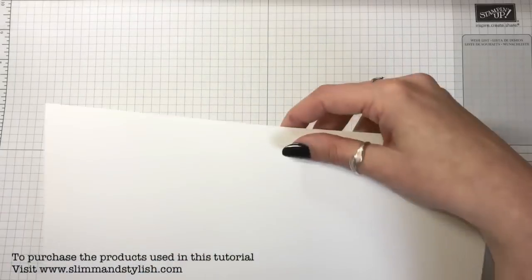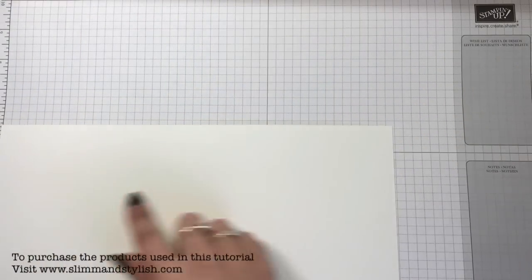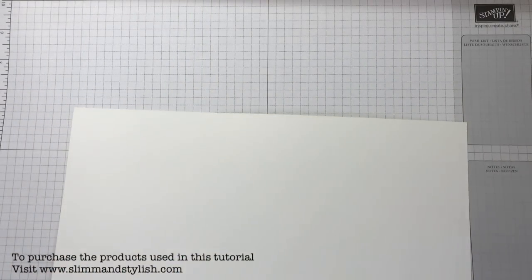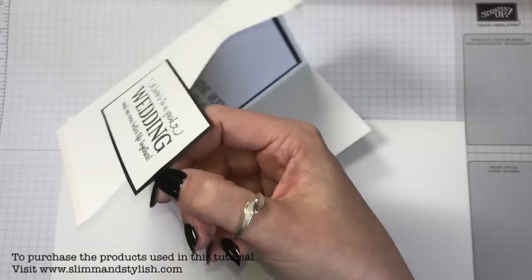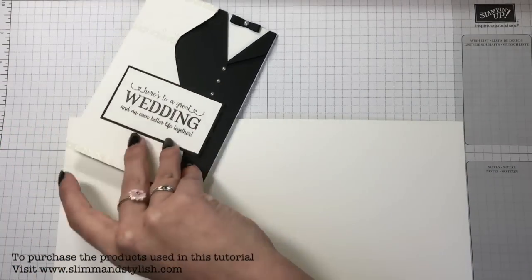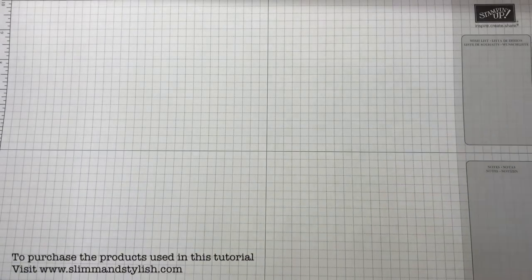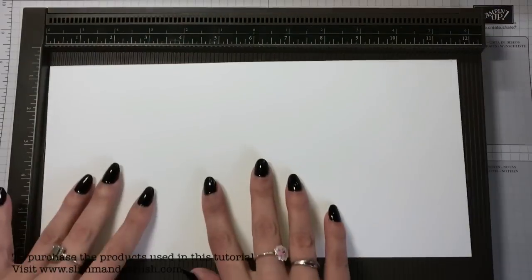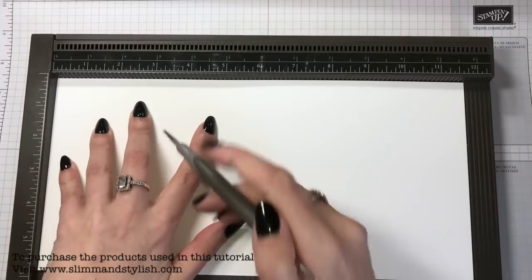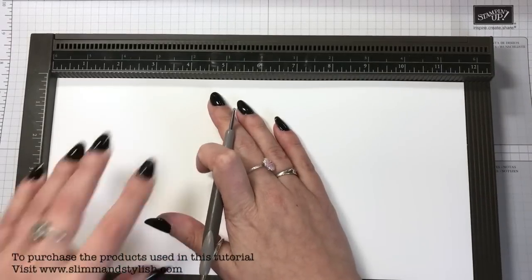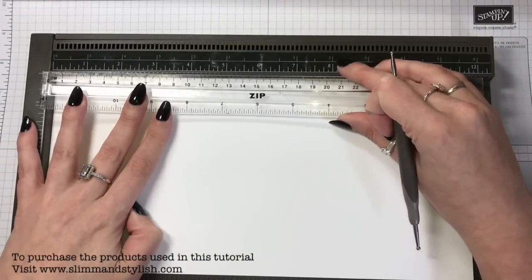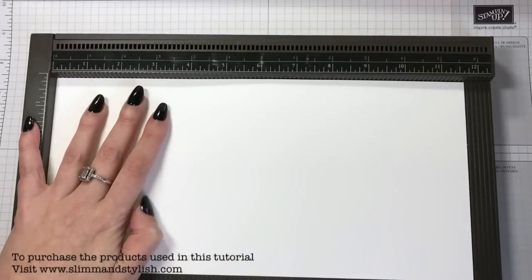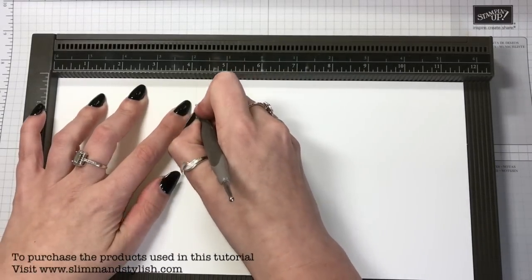I've got scraps of all the other colors because you want to put a sentiment and everything on it. With your scoring tool, you want to take your whisper white sheet of paper and you want to score it at 10.5 centimeters, which is 4 and 1/8. So you want to score at 4 and 1/8 and then go again. So it's going to be 8 and a quarter.